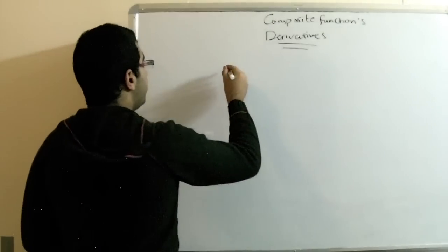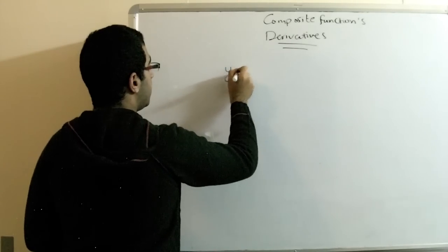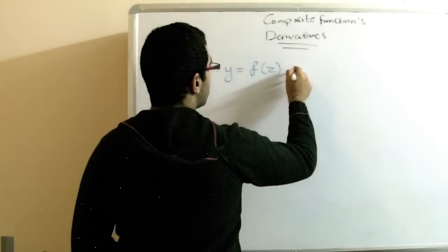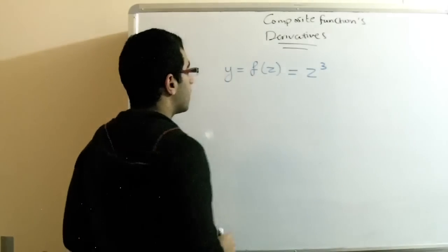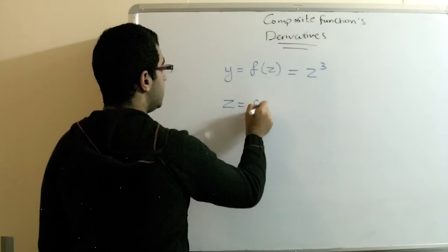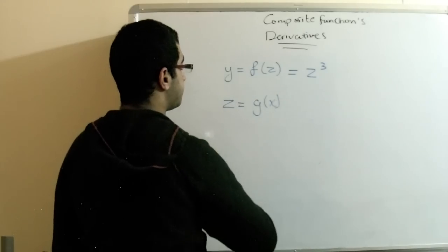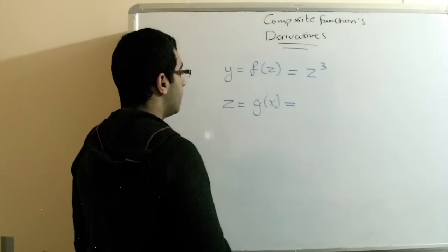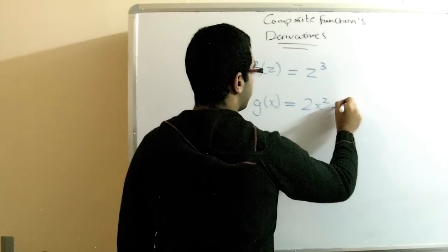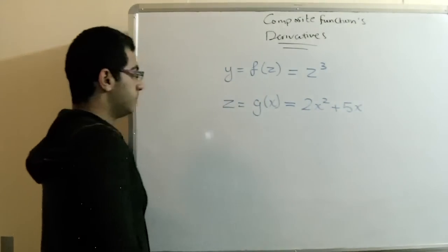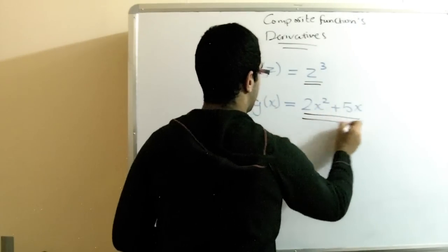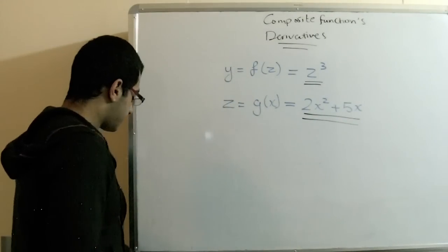Let's have an example to show it more clearly. If we have y equals f of z equals z cubed, and we have z equals g of x where this function equals 2x squared plus 5x. These are our two functions in our problem.